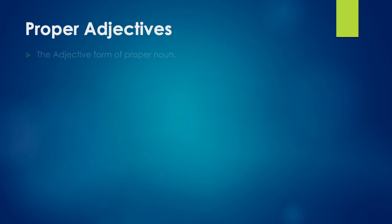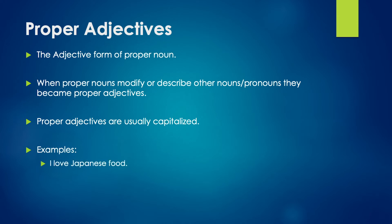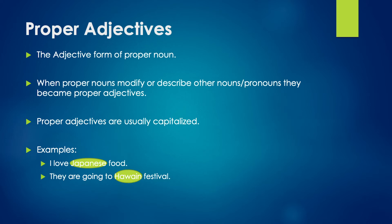Proper adjectives are the adjective form of proper nouns. When proper nouns modify or describe other nouns or pronouns, they become proper adjectives. Proper means specific rather than formal. Proper adjectives are usually capitalized, as proper nouns are. For example, I love Japanese food — Japanese is the proper adjective. They are going to the Hawaiian festival — Hawaiian is the proper adjective. Organic products are very expensive — here, organic is the proper adjective.